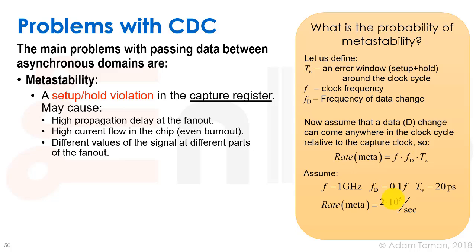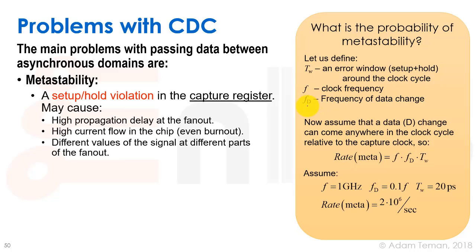Let's make some definitions. We have TW, which is an error window — the setup plus hold window around the clock edge where we'll get an error if there's a data change. We also have the clock frequency F and the frequency of data change, which we call F_D.